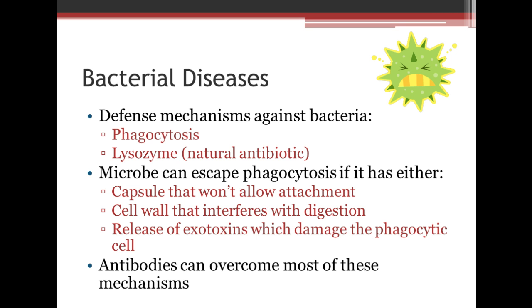There are ways that bacteria can escape phagocytosis. For example, some have a capsule on the outside that prevents attachment for phagocytosis to occur. A bacterium may also have a cell wall that interferes with digestion, and it may release exotoxins that damage the phagocytic cell. Overall, antibodies can usually overcome most of those mechanisms.